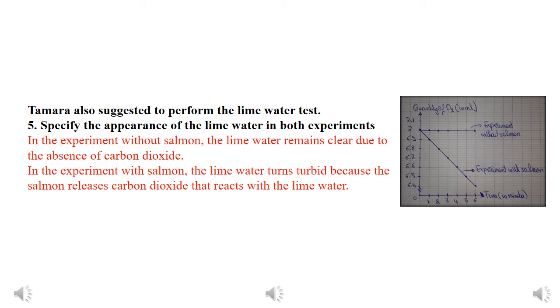Tamara also suggested to perform the lime water test. Do you remember what is the lime water? It is a chemical used in the lab to test the presence of carbon dioxide. In the experiment without salmon, the lime water remains clear due to the absence of carbon dioxide. However, in the experiment with salmon, the lime water turns turbid, because the salmon releases carbon dioxide that reacts with the lime water.